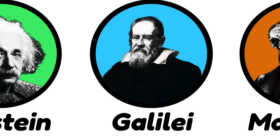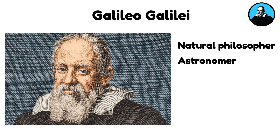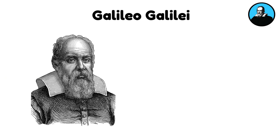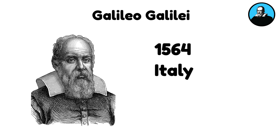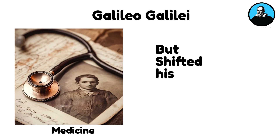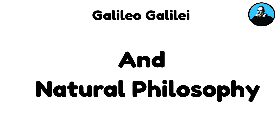Galileo Galilei was an Italian natural philosopher, astronomer, and mathematician who played a pivotal role in the scientific revolution. Born in 1564 Italy, Galileo initially enrolled at the University of Pisa to study medicine, but shifted his interest to mathematics and natural philosophy.